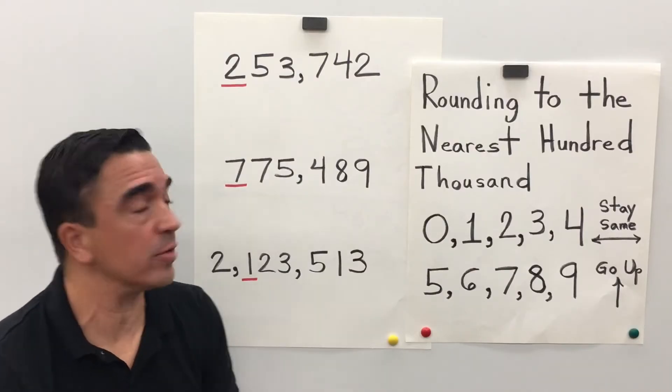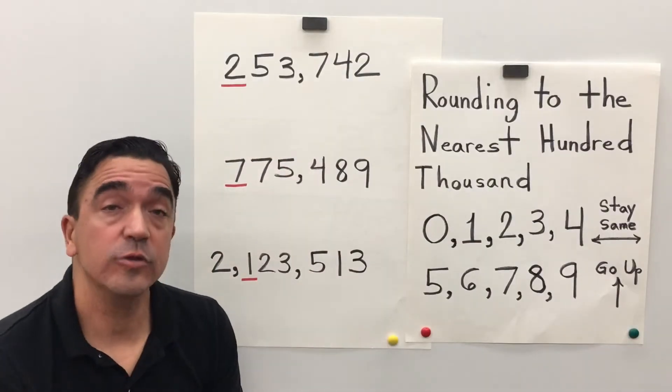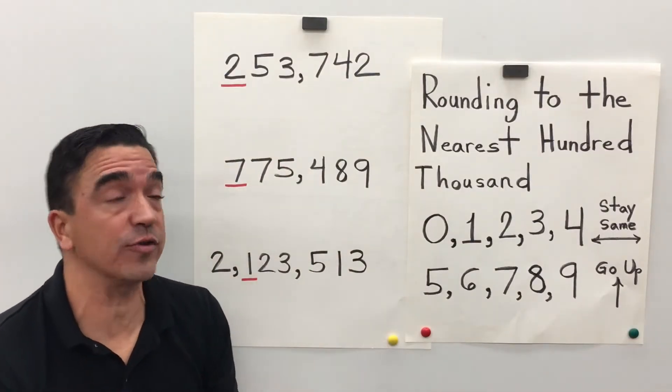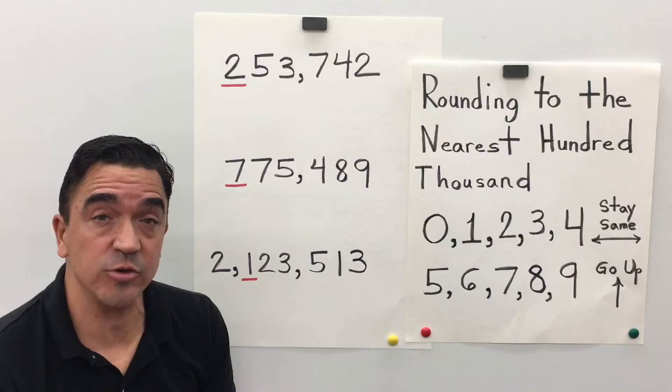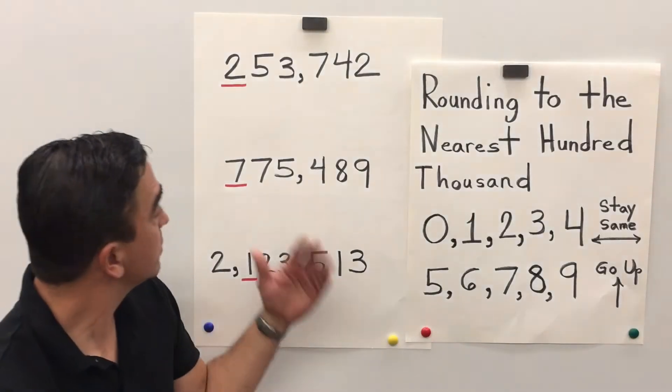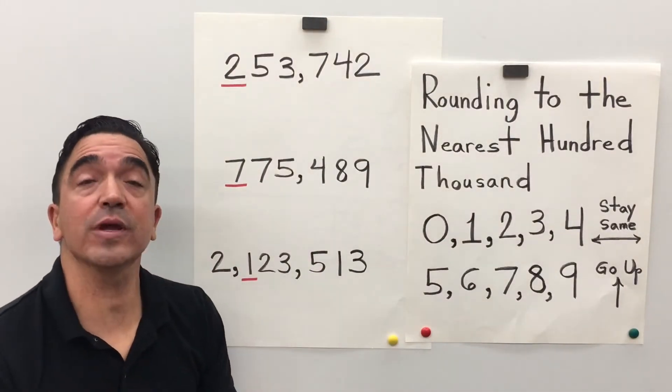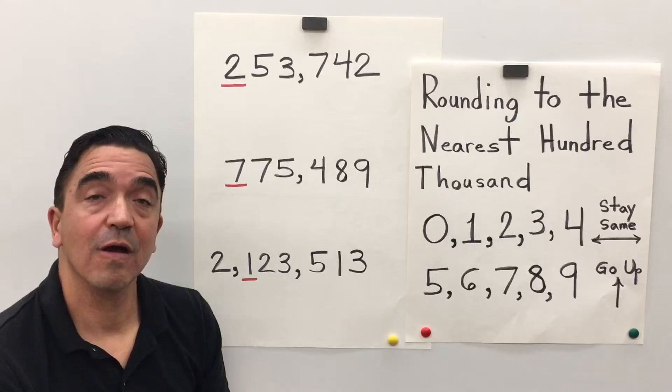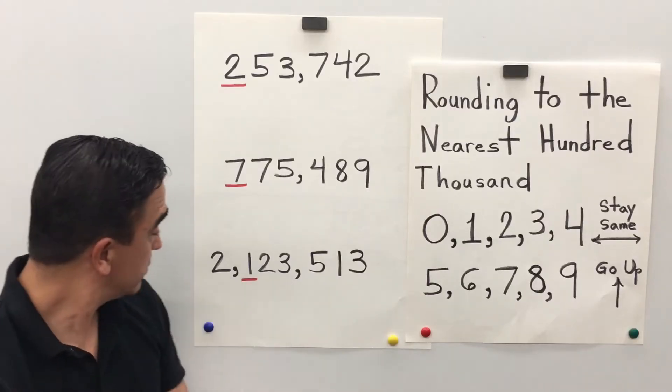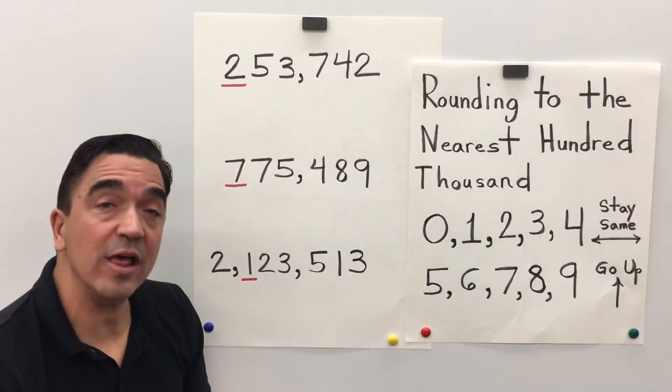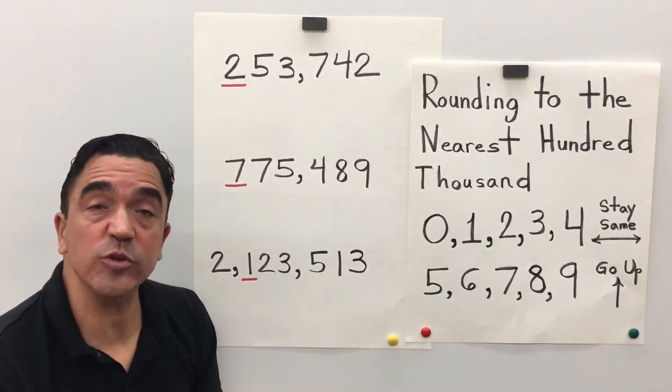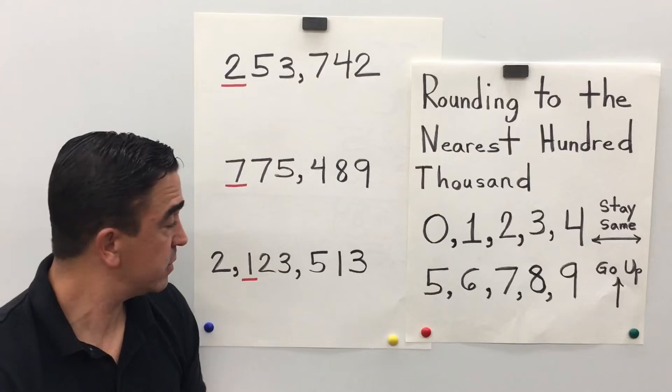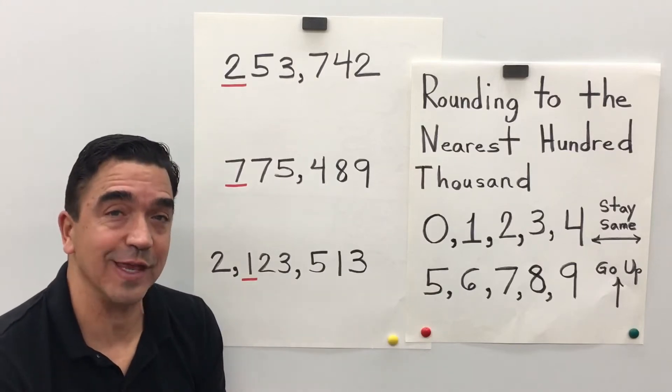Let's look at our three numbers: 253,742, 775,489, and 2,123,513.